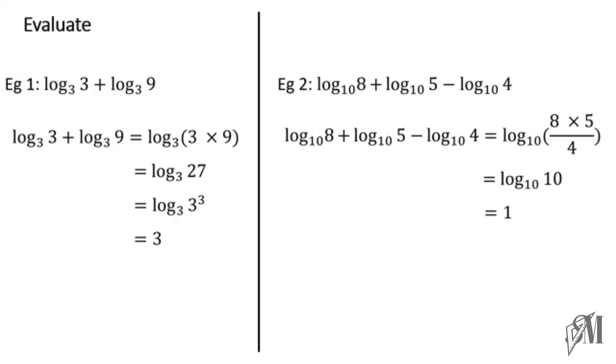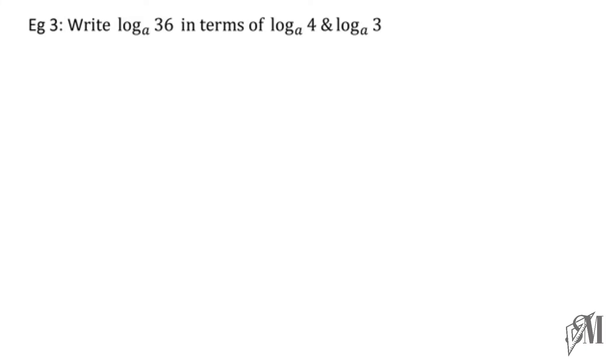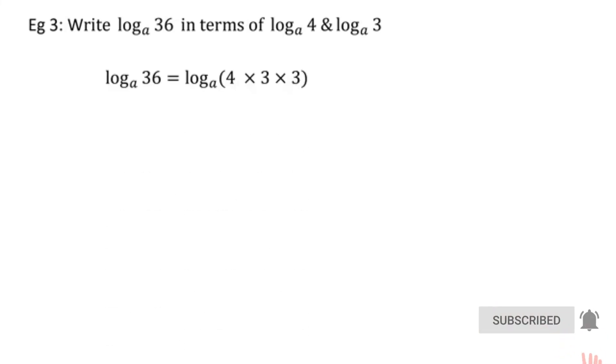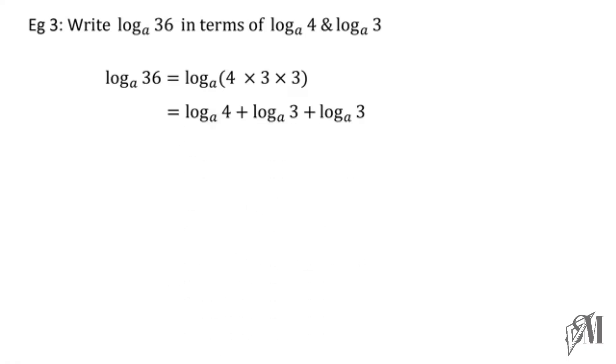Next: write log base a of 36 in terms of log base a of 4 and log base a of 3. First, write 36 as a product of 4s and 3s — since 3 into 3 is 9 and 9 into 4 is 36, we have 36 = 4 × 3 × 3. By the first law, each multiplication becomes a sum: log base a of 4 plus log base a of 3 plus log base a of 3. This expresses log base a of 36 in the required terms.